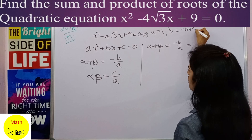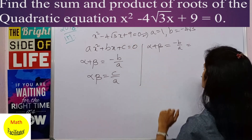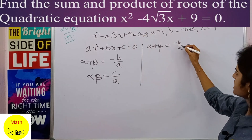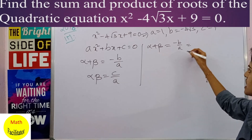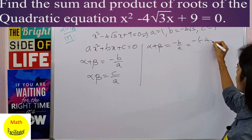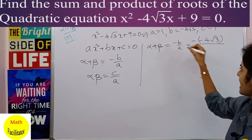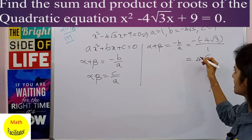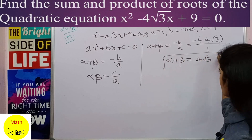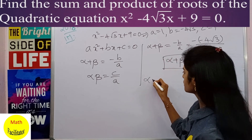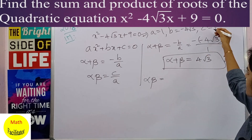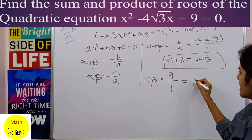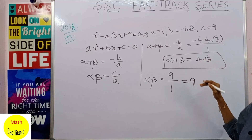Comparing with the standard form, c = 9. So α + β = -b/a = -(-4√3)/1 = 4√3. The product of the roots α·β = c/a = 9/1 = 9. So the sum of the roots is 4√3 and the product of the roots is 9.